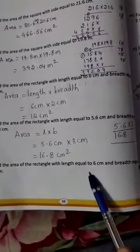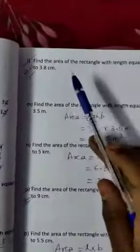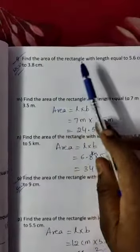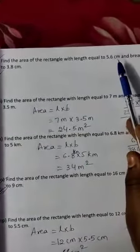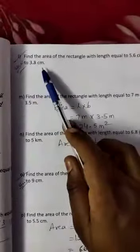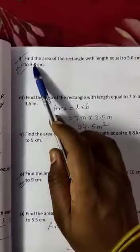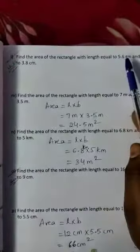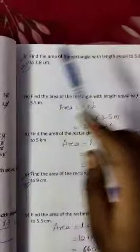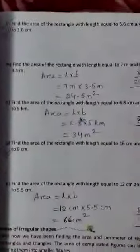Now do problem L: Find the area of the rectangle with length equal to 5.6 cm and breadth equal to 3.8 cm. Multiply 5.6 into 3.8 — remove the points and do 56 into 38 to get the answer.